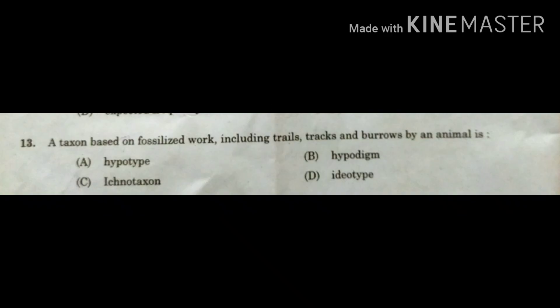The next question: a taxon based on fossilized work including trails, tracks, and burrows by an animal is — option A: hypotype, option B: hypodigm, option C: ichnotaxon, option D: idiotype. Option A, hypotype, is a type specimen used to describe plants and animals based on data available from previous publications or certain figures.